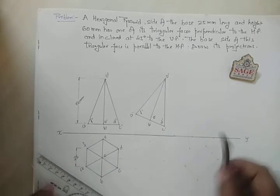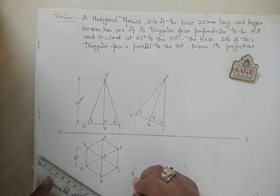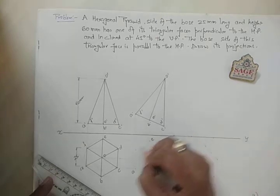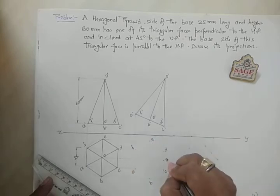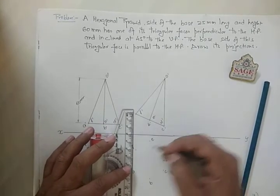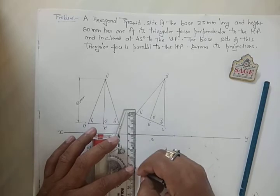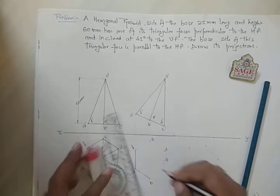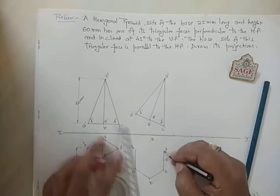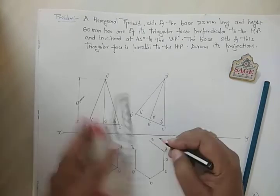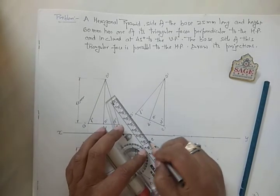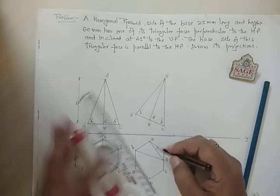Now with the help of this front view, drop perpendiculars and draw parallel lines to get the top view points: A, B, C, D, E, F, and apex O. As we are looking from the top, the base is not visible, but we draw the extreme of the solid — which gives the complete hexagon outline. Complete the outer part of the solid, then from the apex join the visible slant edges from the top.